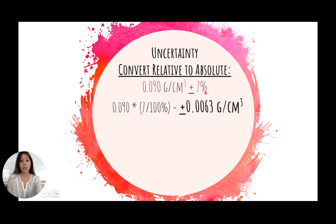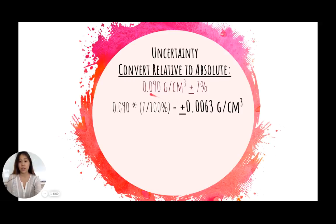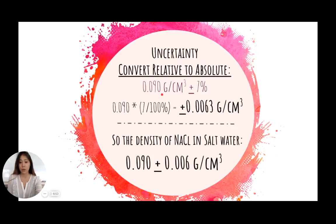Now, looking at this, this is where precision comes in. We can see that the uncertainty value 0.0063 is accurate to the ten-thousandths place, whereas our density value 0.09 is only accurate to the thousandths place. So these two are not the same — the values are not precise and don't reflect the density calculation. This means we have to round back to the thousandths place, giving a final density with absolute uncertainty of 0.09 plus or minus 0.006 grams per centimeters cubed.